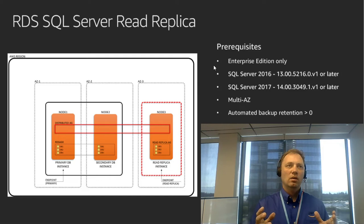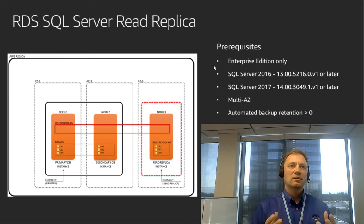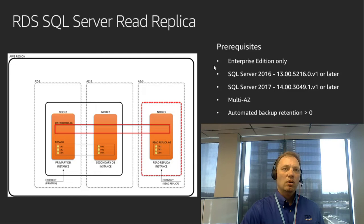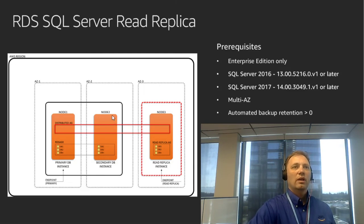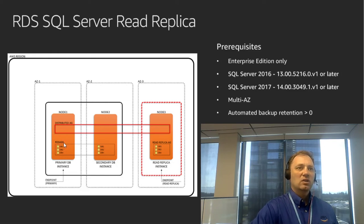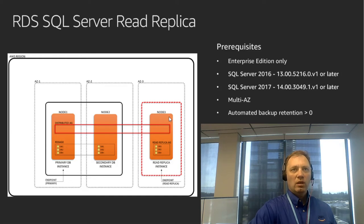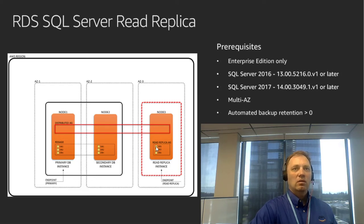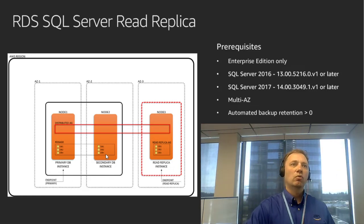What you see on the screen is a high-level diagram of the read replica implementation. Hopefully you realize this is nothing but a logical extension of the diagram from the previous slide. You still have node 1 in AZ1, node 2 in AZ2, and an availability group called RDS-AG0. But now we also have node 3 sitting in availability zone AZ3. Node 3 has its own availability group called the read replica availability group, and both RDS-AG0 and the read replica AG are members of another overarching availability group called a distributed AG.